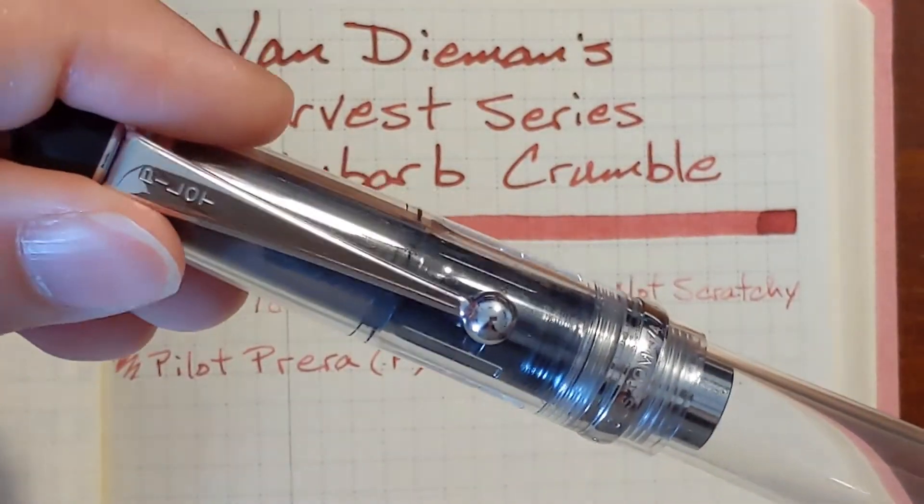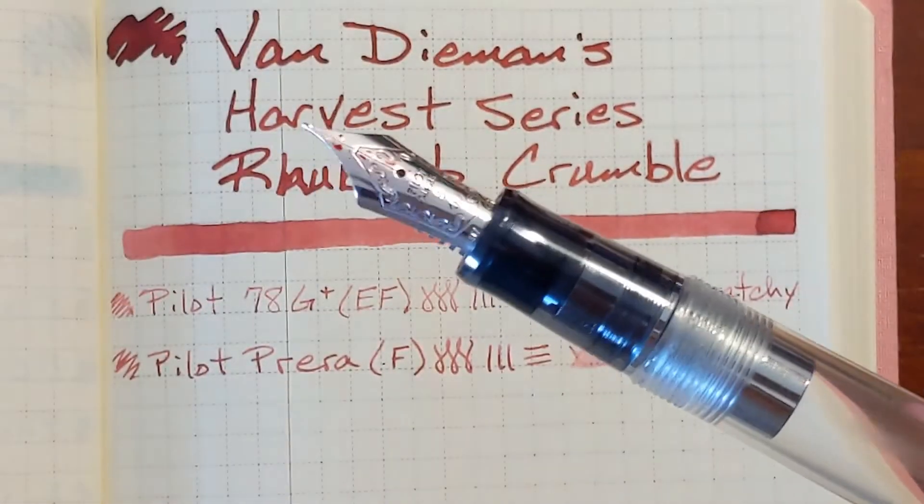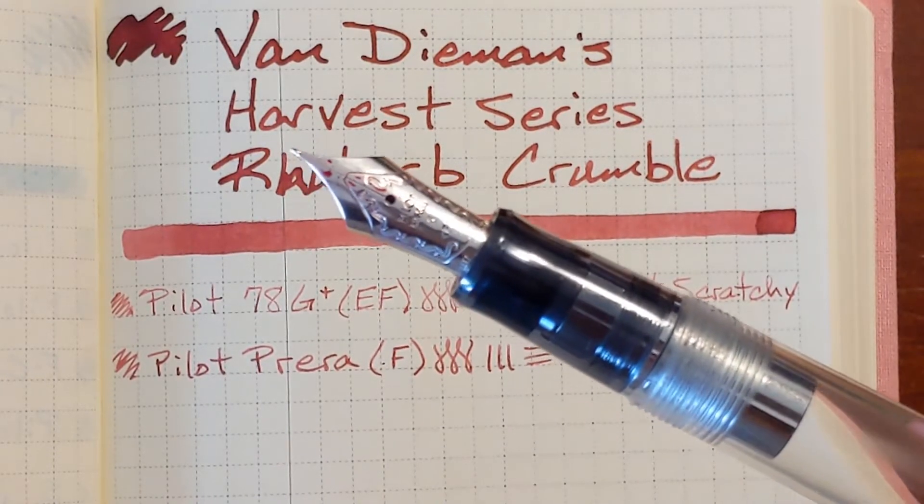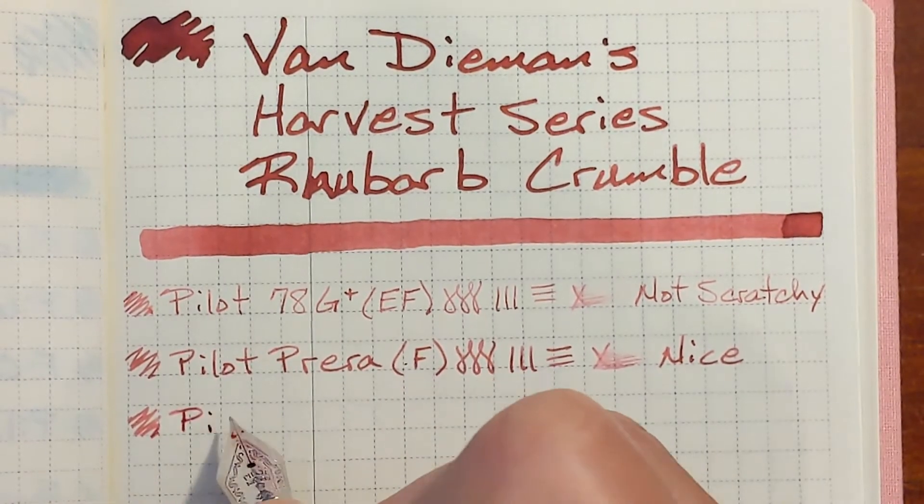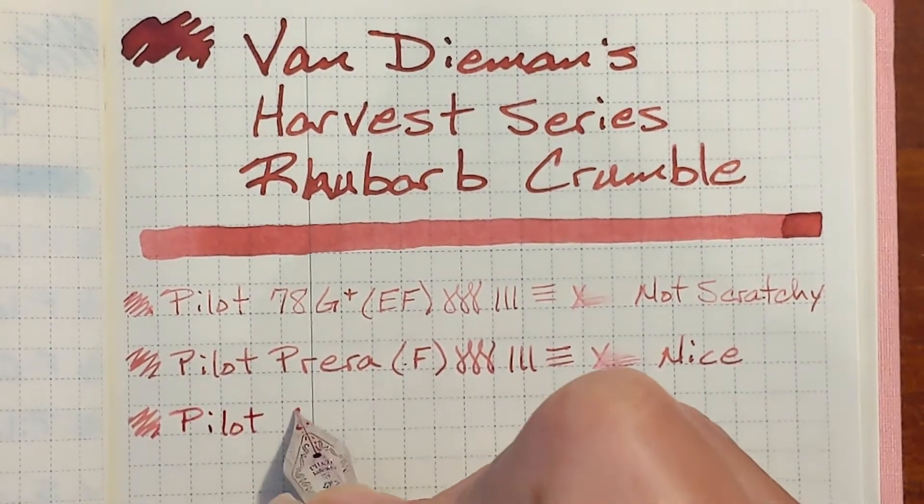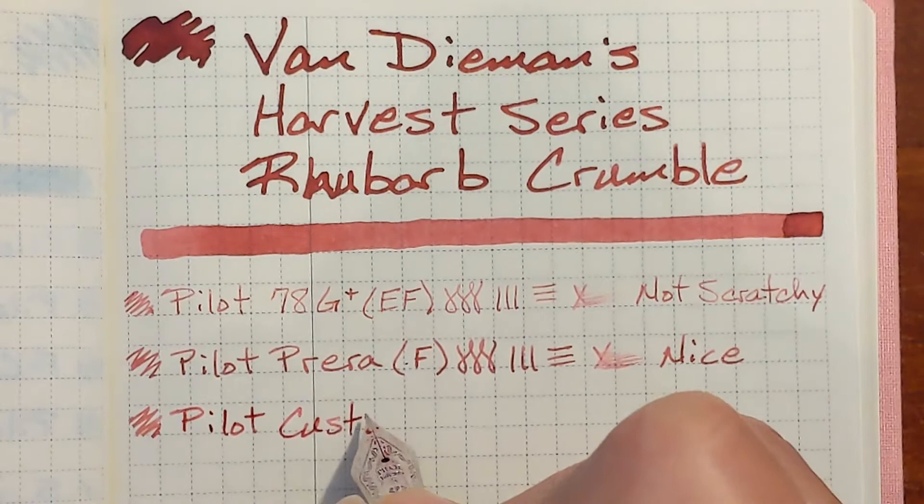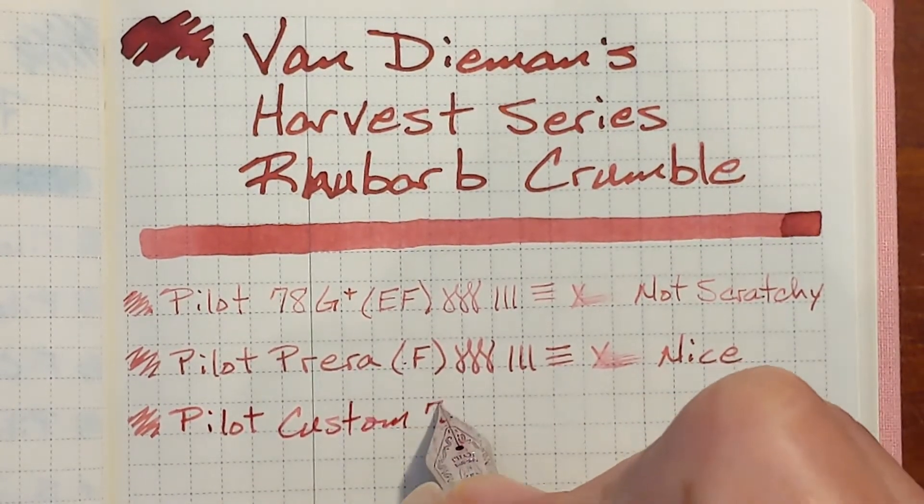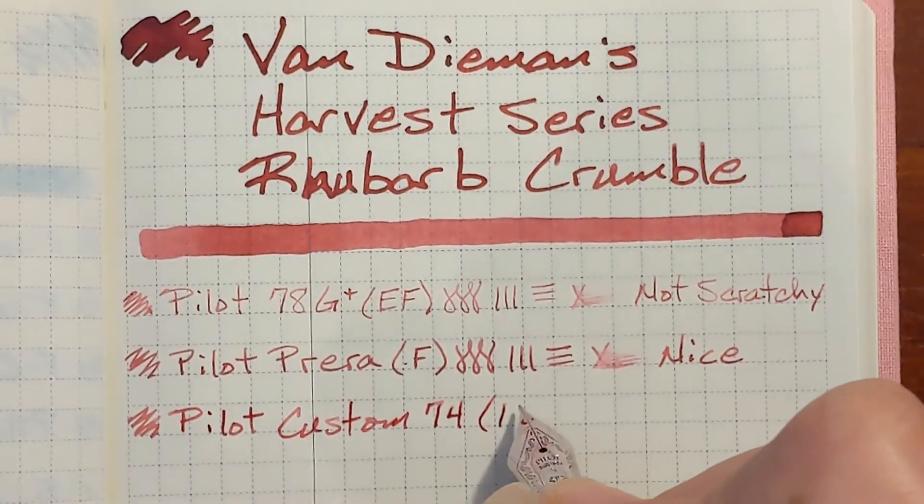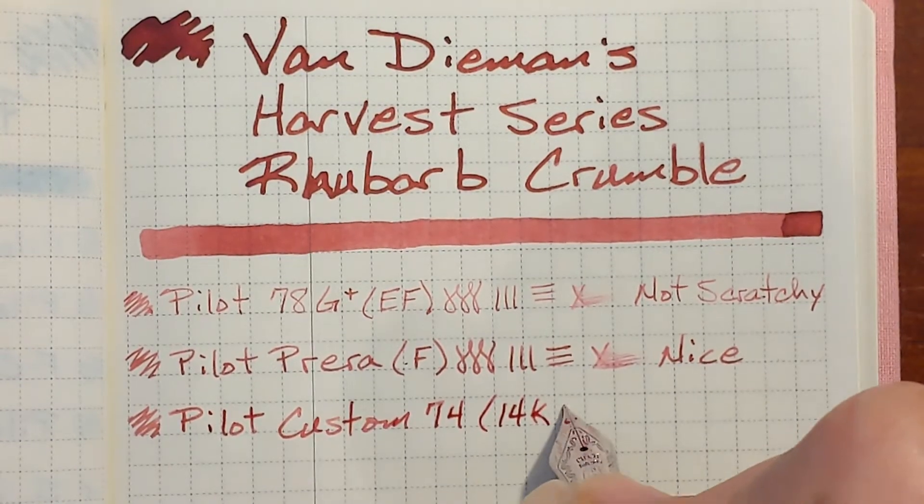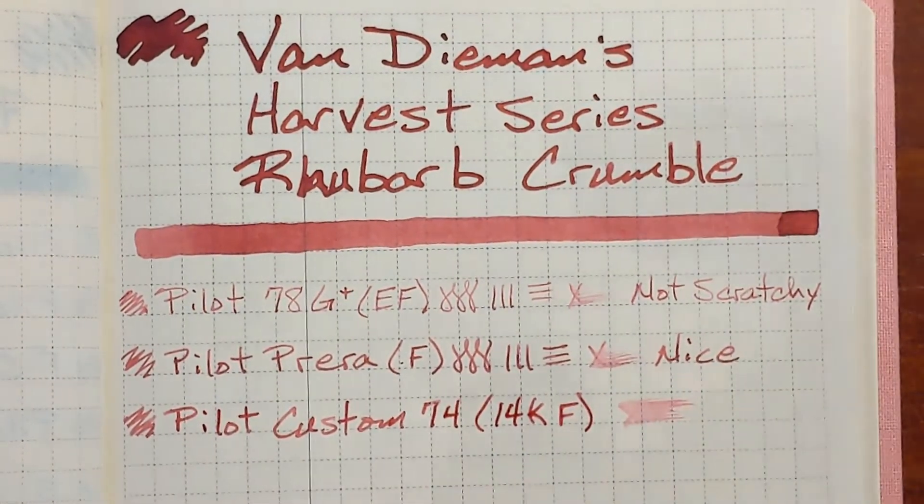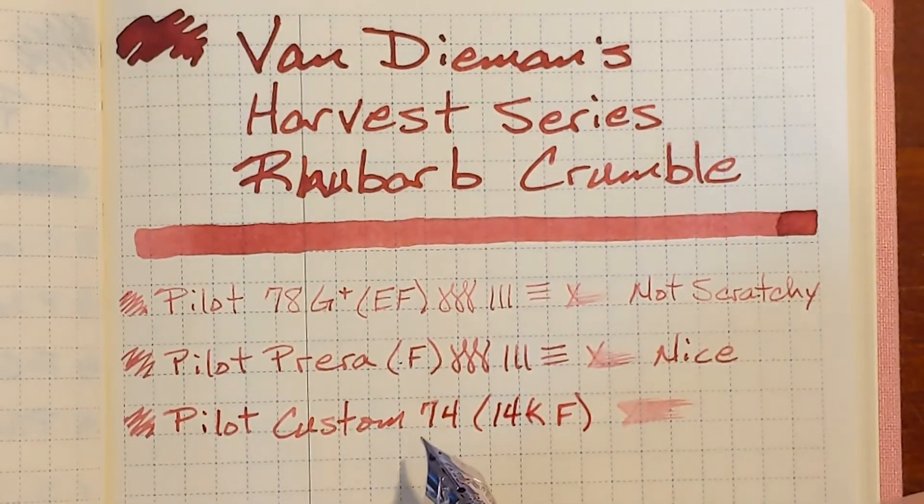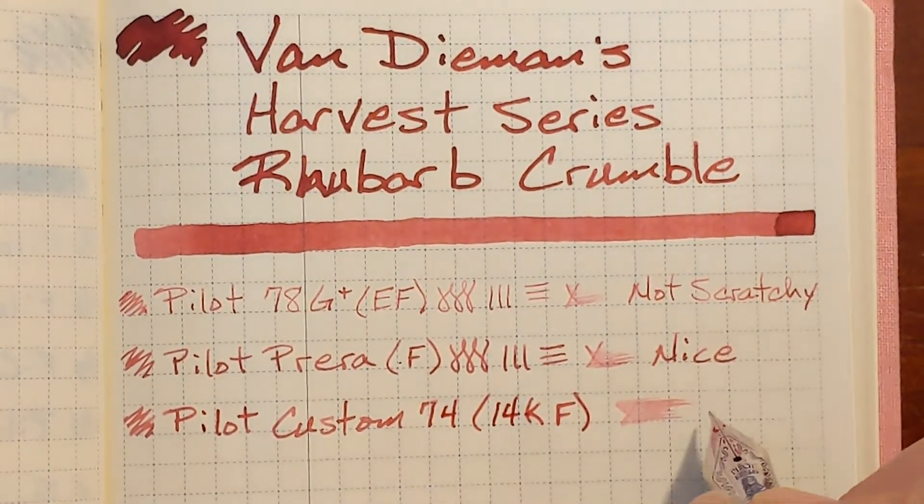Next I've got my Pilot Custom 74 with a 14 karat fine nib. This is much smoother. And I like the amount of ink that it's putting down. That's overall much more pleasant.